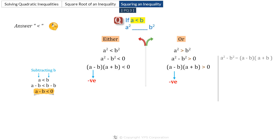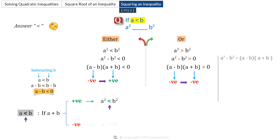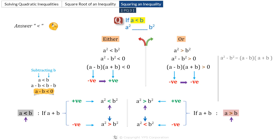Now a minus b is negative. If a plus b is positive, then (a minus b)(a plus b) is negative, meaning a squared is less than b squared — the sign of inequality remains the same upon squaring. If a plus b is negative, then a squared is greater than b squared — the sign reverses. This result holds even if the given inequality is a greater than b. If a plus b is positive, the inequality sign remains the same upon squaring; if a plus b is negative, the sign reverses.